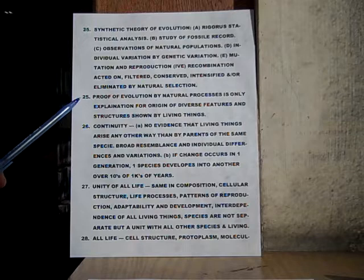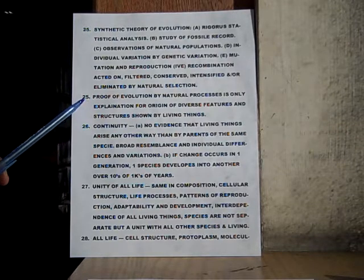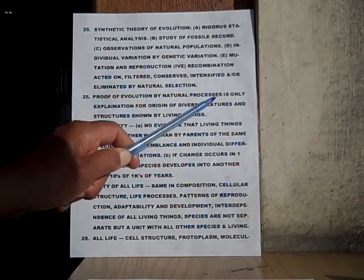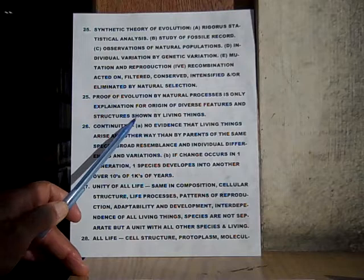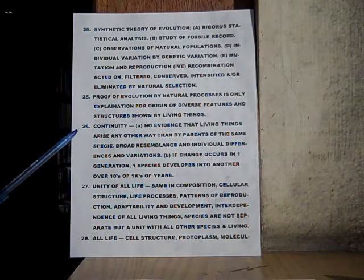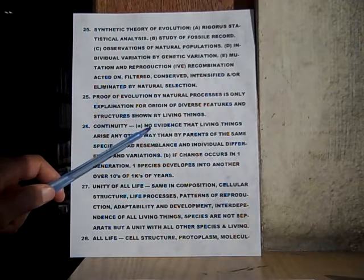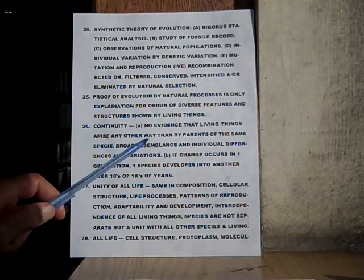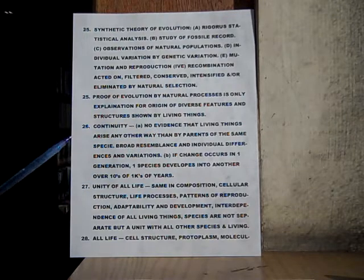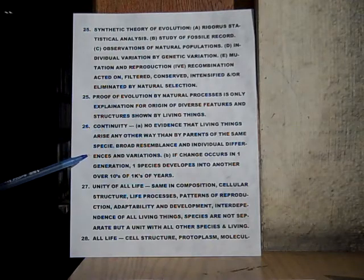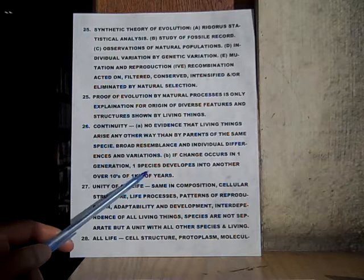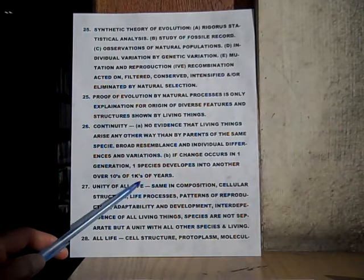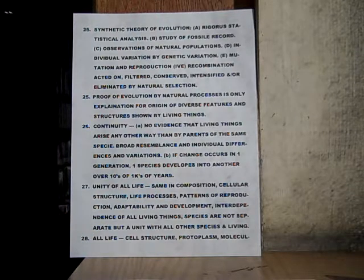This should be twenty-six. Proof of evolution by natural processes is the only explanation for the origin of life and of the diverse features and structures shown by living things. Number twenty-six: continuity — A. There is no evidence that living things arise any other way than by having parents of the same species. Broad resemblance and individual differences and variations are part of that. B. If change occurs in one generation, one species develops into another over tens of thousands of years. You cannot see one species turn into another over a short time frame.